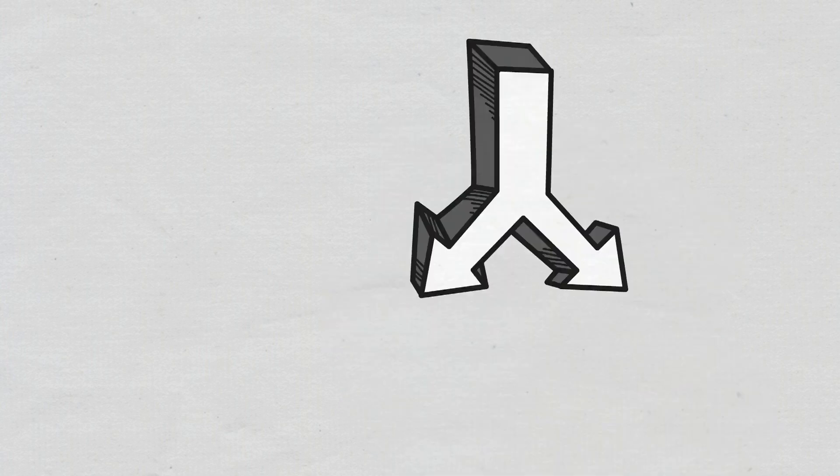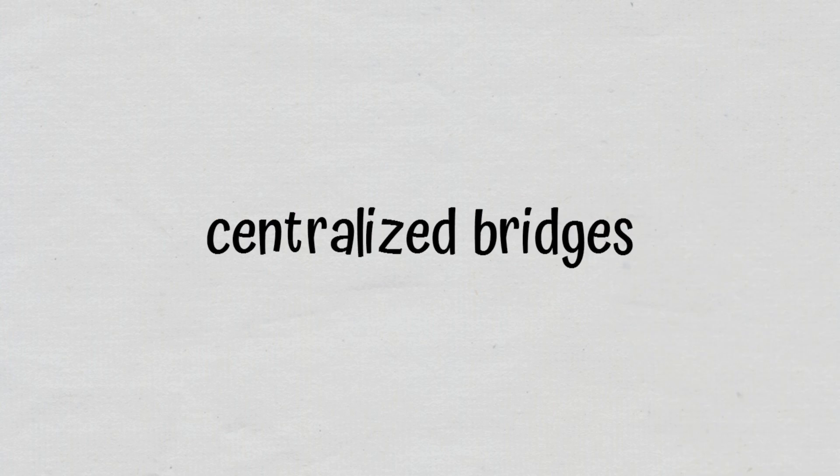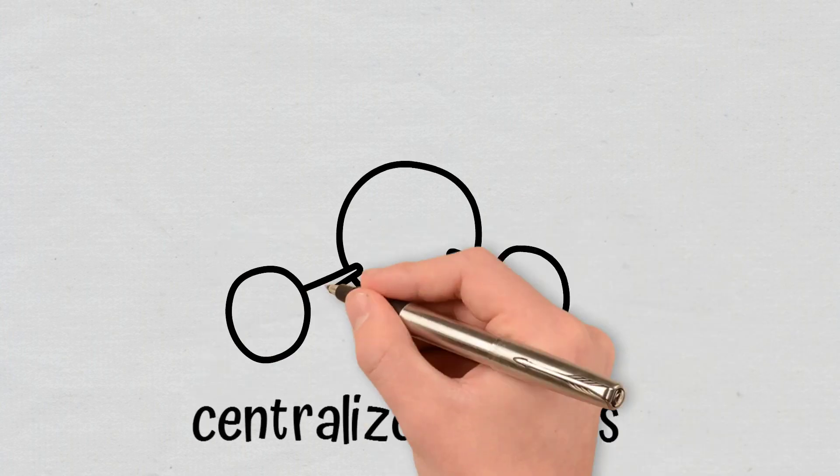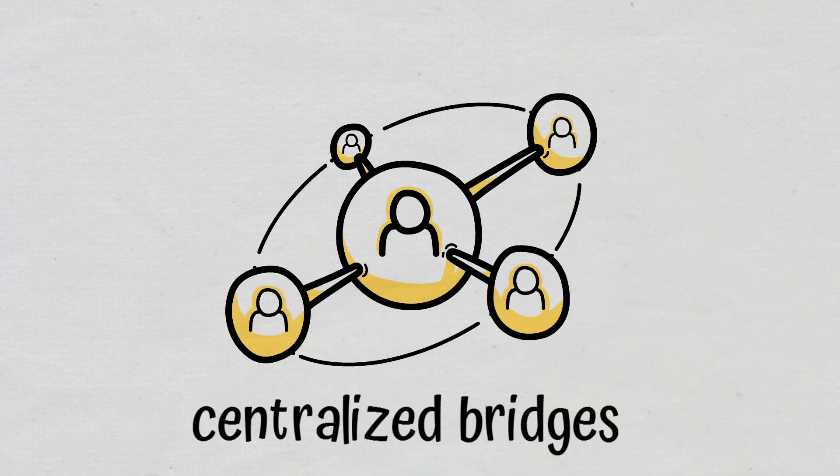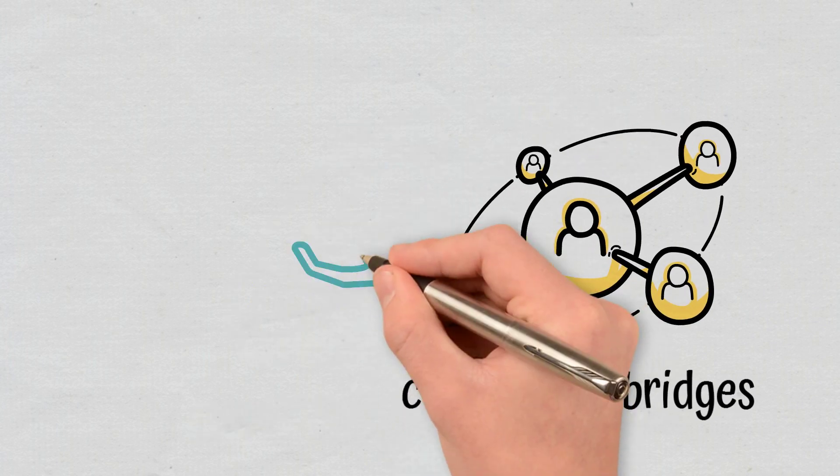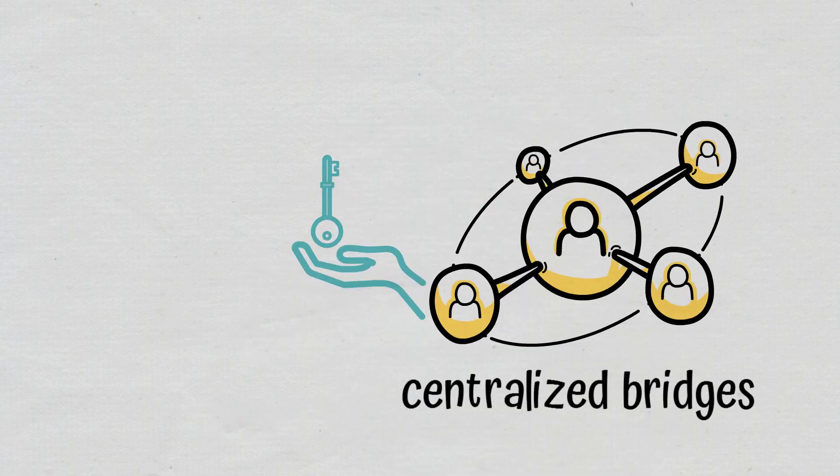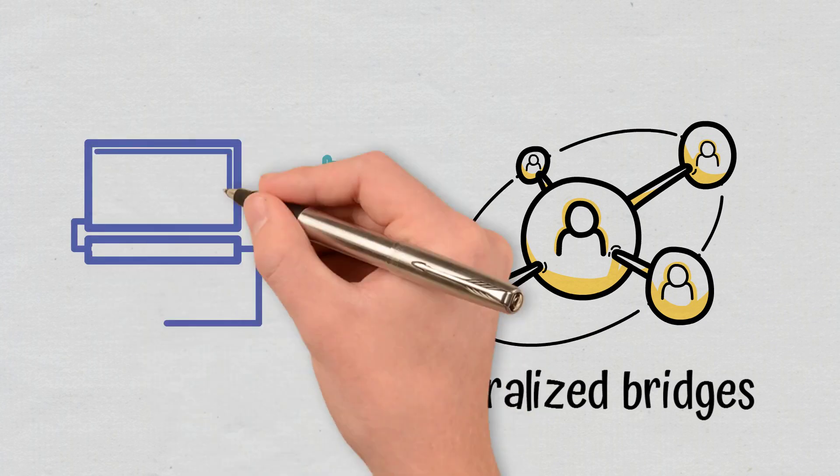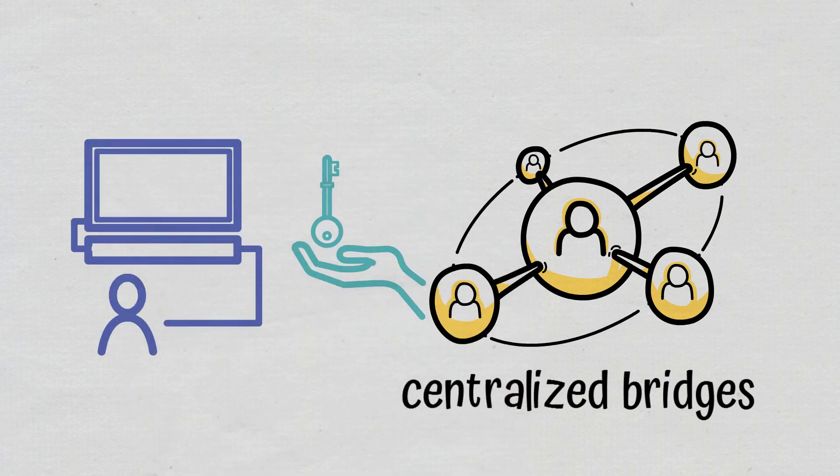In the first category, we have the centralized bridges, which rely on the existence of an authority or a central system to operate. This means that users must put their trust in a mediator to use a given service or application.